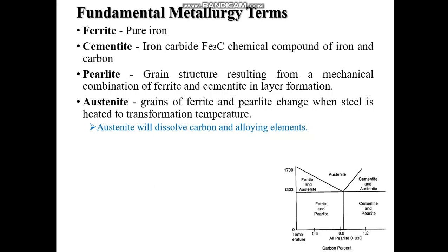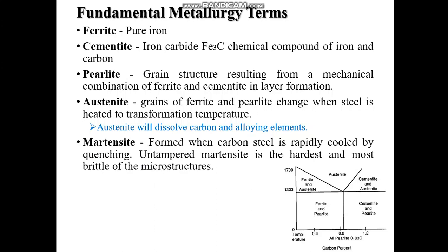On cooling below 727 degree Celsius, austenite starts transforming into pearlite and ferrite. The last phase is martensite, which is a metastable phase of steel formed by transformation of austenite below 320 degree Celsius. Martensite is an interstitial supersaturated solid solution of carbon in alpha iron and has a body-centered tetragonal lattice. It has carbon content up to 2% and is extremely hard and brittle. It is a product of rapid cooling, that means quenching.